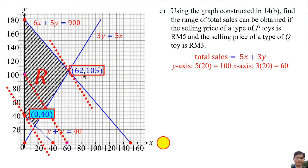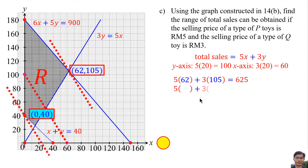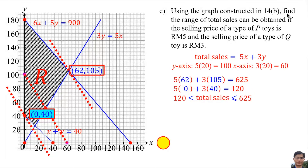The maximum point is at (62, 105). Substituting into the equation, the maximum total sales is 625. The minimum point is at (0, 40). Substituting gives a minimum total sales of 120. To find the range of total sales, we write it with no equal sign here because the first constraint uses a dashed line. The maximum is 625.